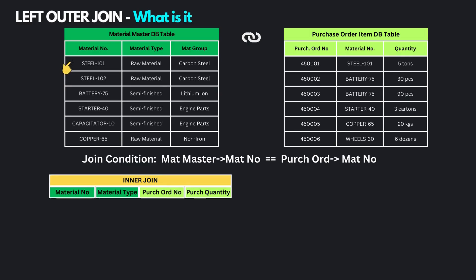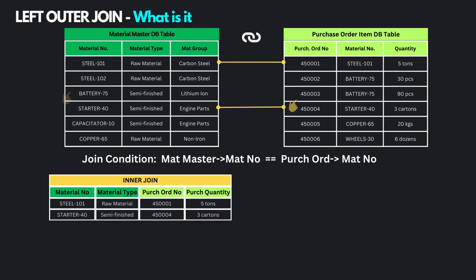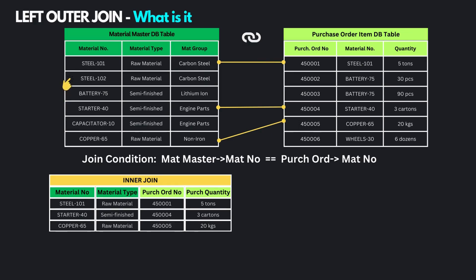The material Steel 101 was purchased in purchase order 450001, so these two records are joined together and appear in the inner join output. Similarly, the material Starter 40 was ordered in purchase order 450004 and would appear in the output. The material Steel 102 was not purchased in any purchase order — it is not common to both tables and hence will not appear in the inner join output. Similarly, the material Capacitor 10 will also not appear since it only exists in one of the tables.